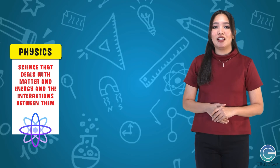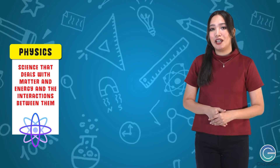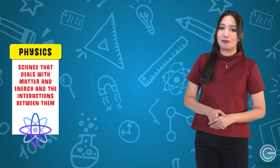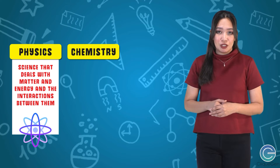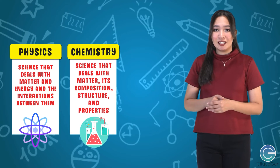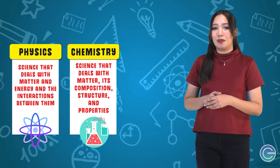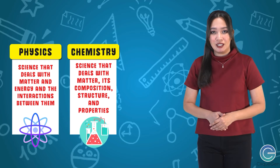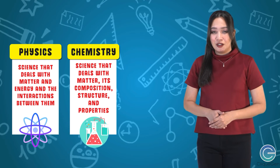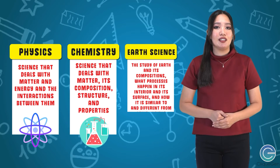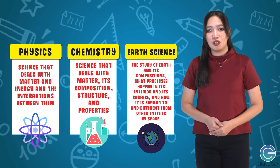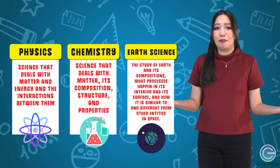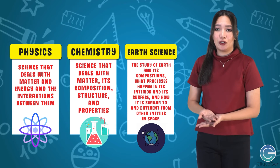Physics is the science that deals with matter and energy and the interactions between them. Chemistry is the science that deals with matter, its composition, structure, and properties. Earth science is the study of earth and its compositions, what processes happen in its interior and its surface, and how it is similar to and different from other entities in space.